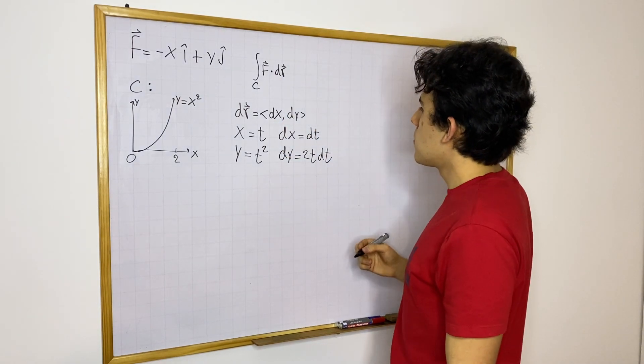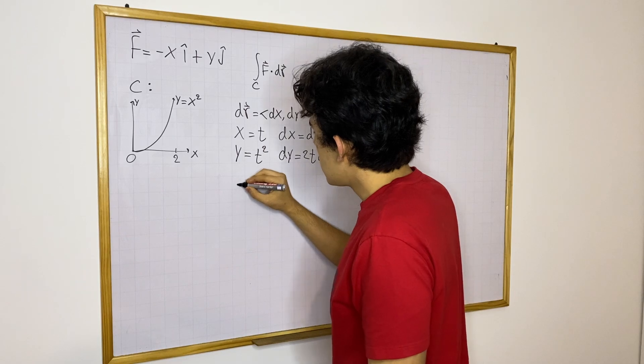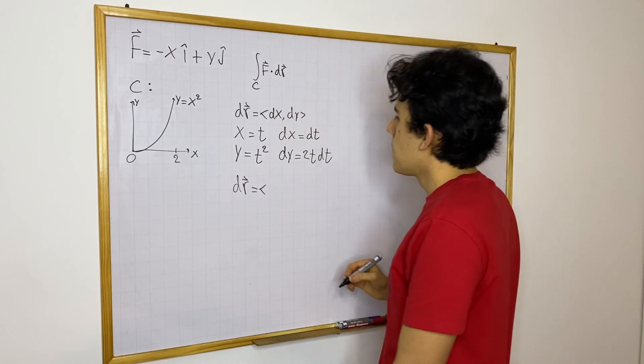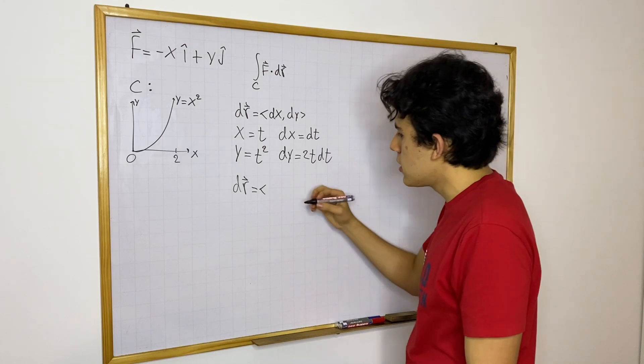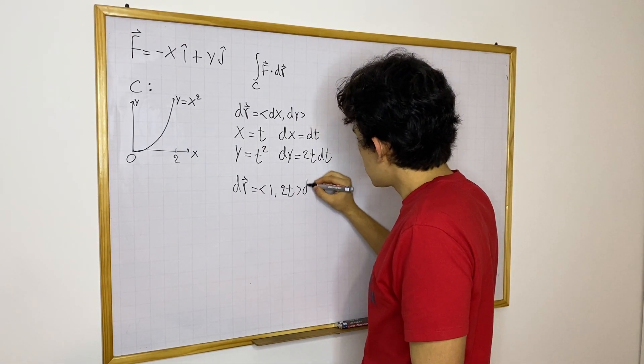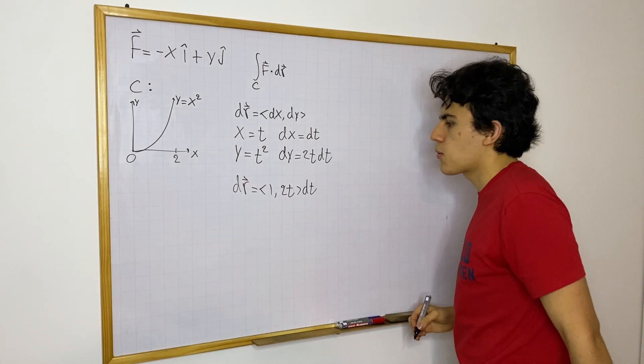So then we have the following, we can say that dr, our displacement vector in terms of our parameter t is going to be (1, 2t) dt. So this is great.